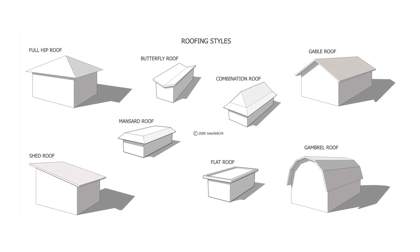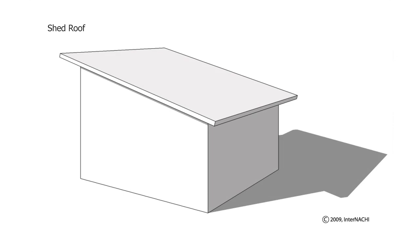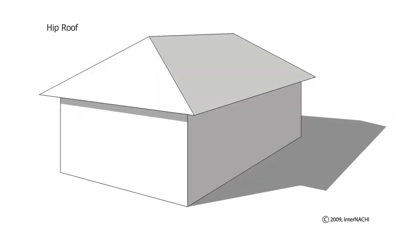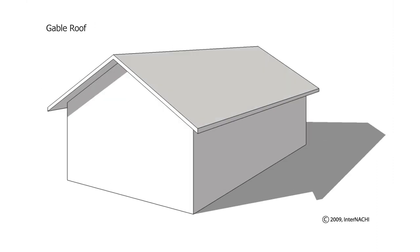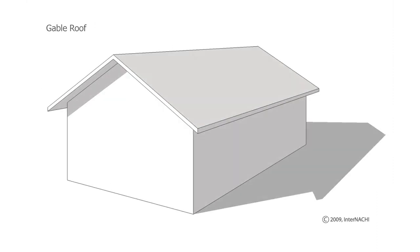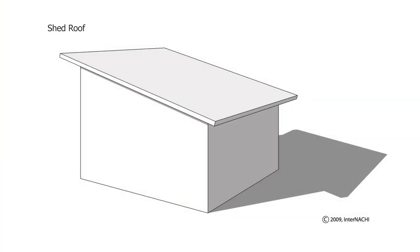There are several different styles of roofs, including shed roofs, hip roofs, and gable roofs. This is a shed roof. A shed roof has one roof plane.